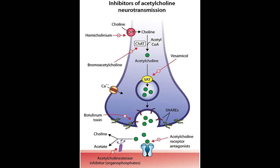Of note, reversible acetylcholinesterase inhibitors are used in myasthenia gravis, which is characterized by autoantibodies that destroy the acetylcholine receptors.